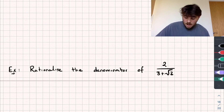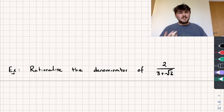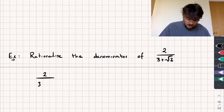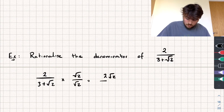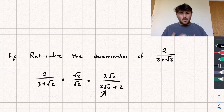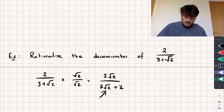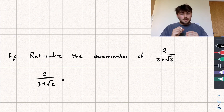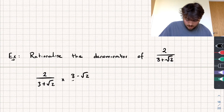The harder variety looks like this: 2 over (3 plus √2). If we were to multiply the top and bottom by just √2 like we did in the last example, we'd get 2√2 over (3√2 plus 2) — we've still got a square root on the denominator, which we don't want. Instead, what we're going to do is take the conjugate: since we have 3 plus √2 on the denominator, we multiply the top and bottom by 3 minus √2.